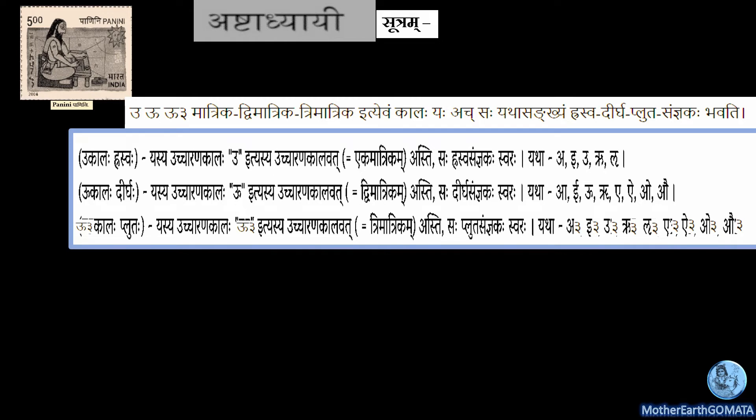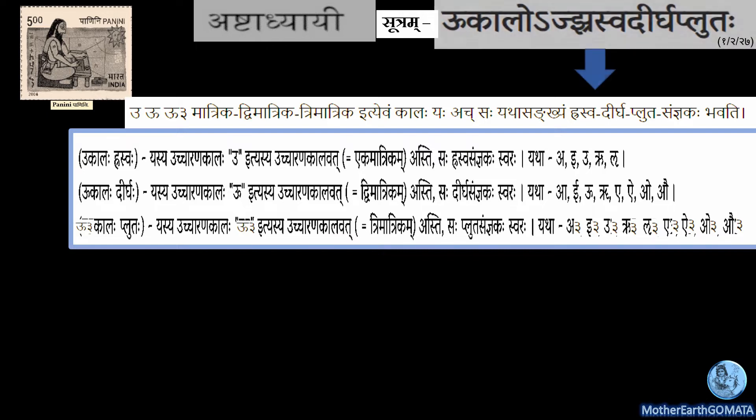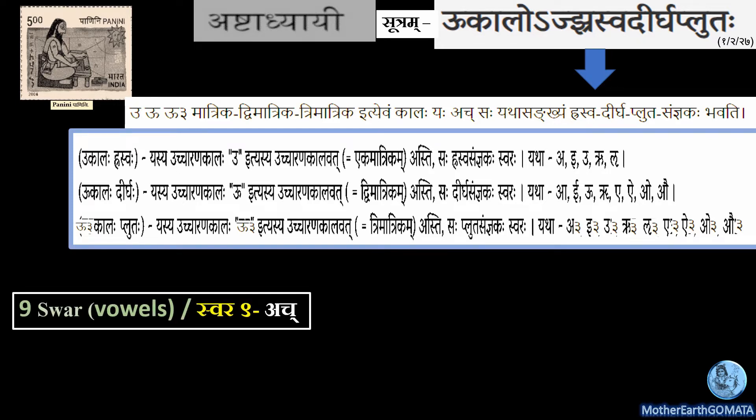In Vedic Sanskrit, pronunciation of Swar has a very important role to play, as the literal meaning is changed if pronunciation of Swar is not done properly. As stated by Maharishi Panini in Ashtadhyayi, in the sutra 'Ukalujhasvadirgha Plutaha', these nine Swar are classified into three types based on the time taken for their pronunciation: Hraswa, Dirgha, and Pluta.